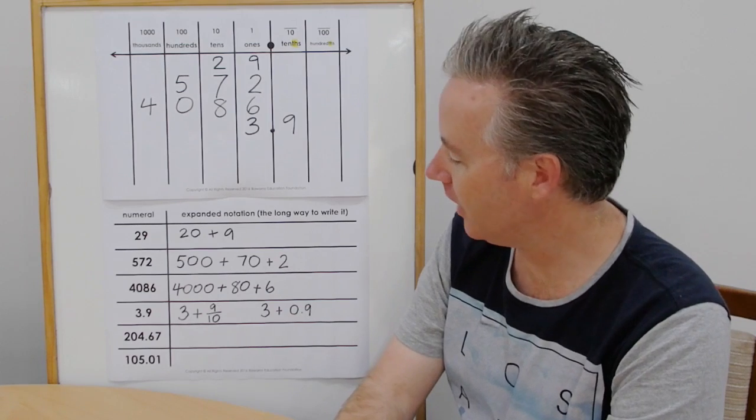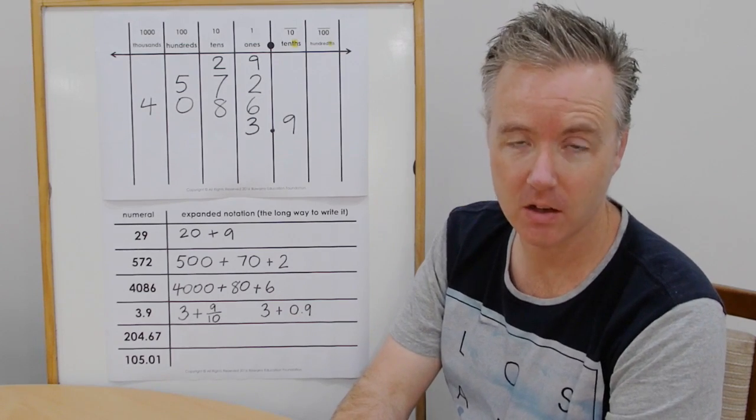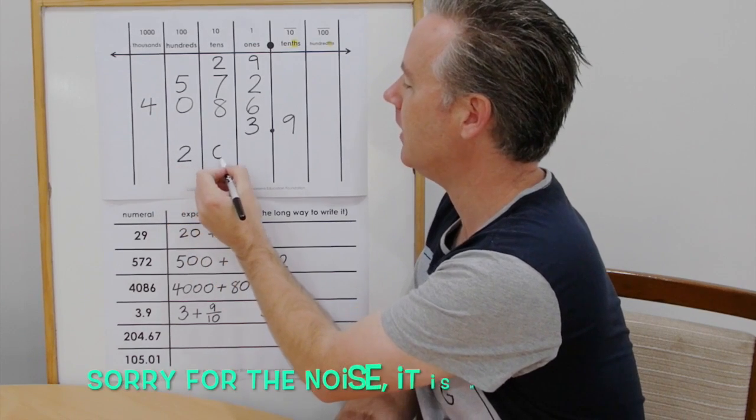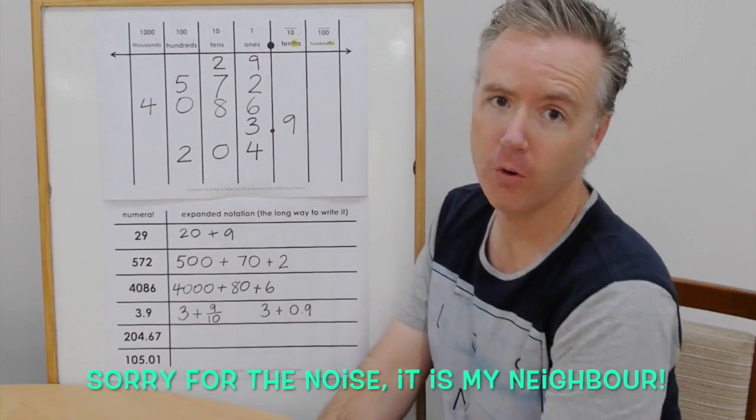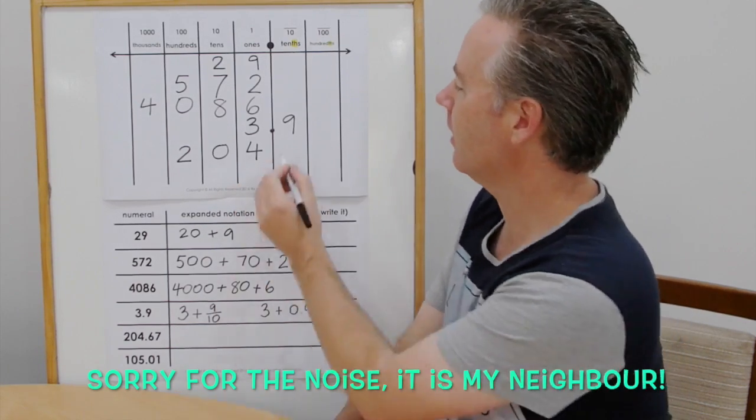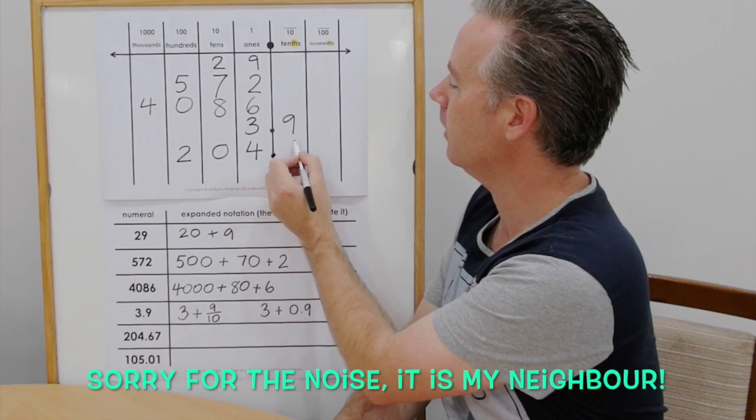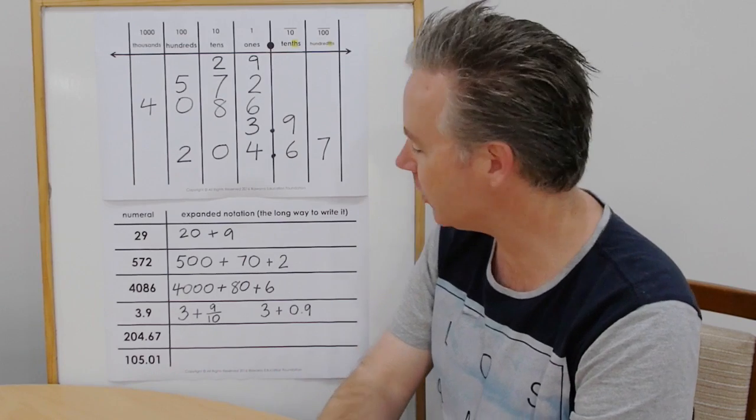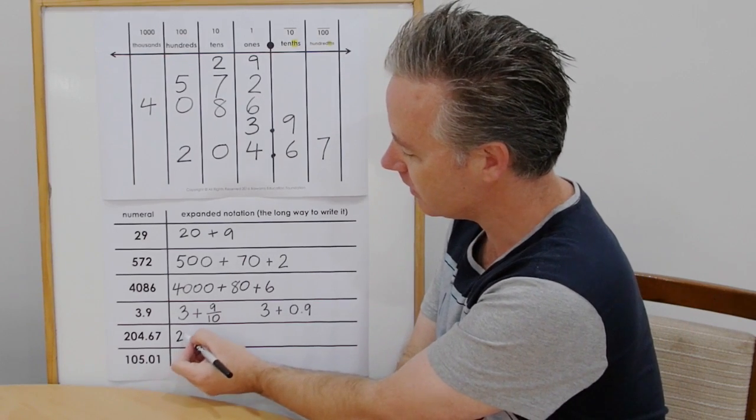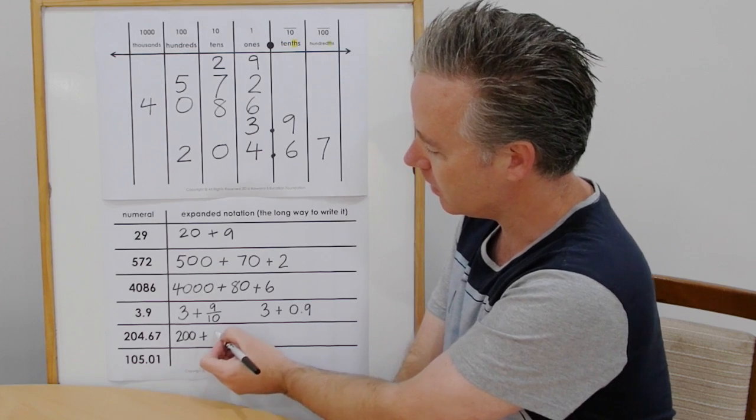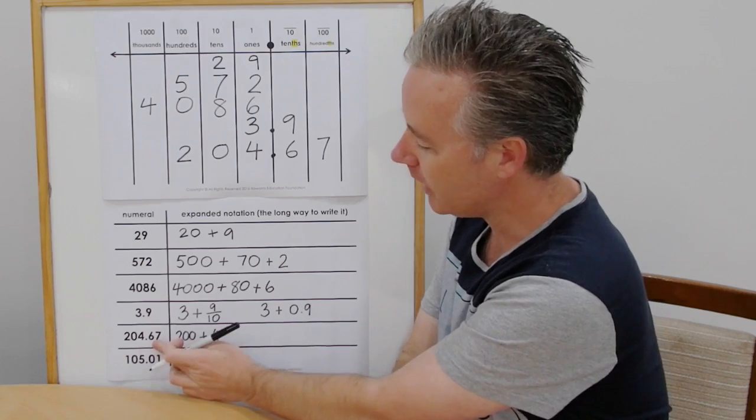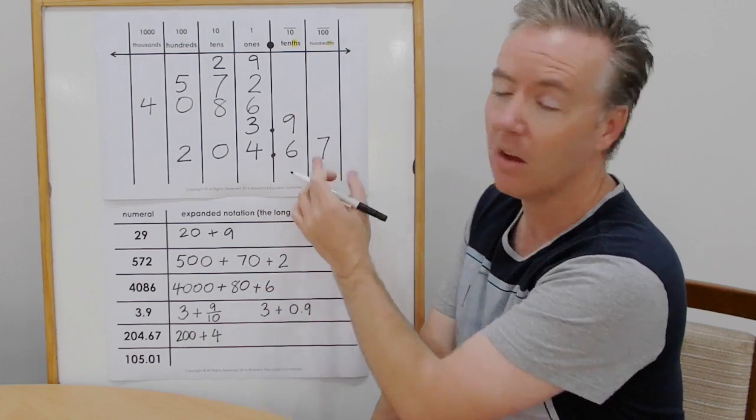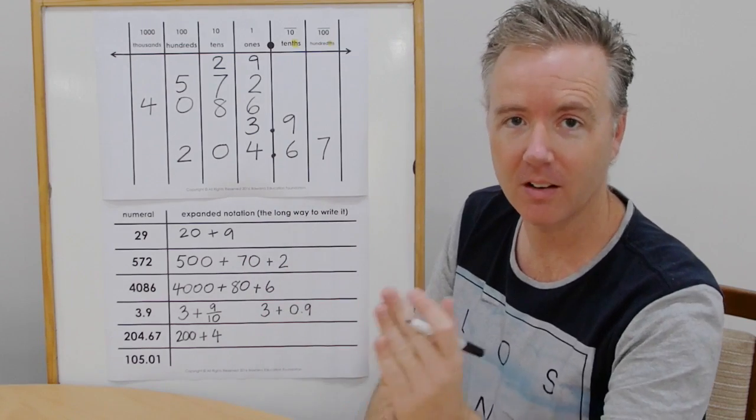So let's try the second last one, two hundred and four and sixty-seven hundredths. We don't have any tens. Two hundreds. We have four ones and we have sixty-seven hundredths. So now let's write that out in expanded notation. Two hundred plus four and we have six-tenths and seven-hundredths. We're going to keep them separate. You might want to put sixty-seven hundredths. I'm actually going to do them in their separate expanded columns. Six-tenths and seven-hundredths.